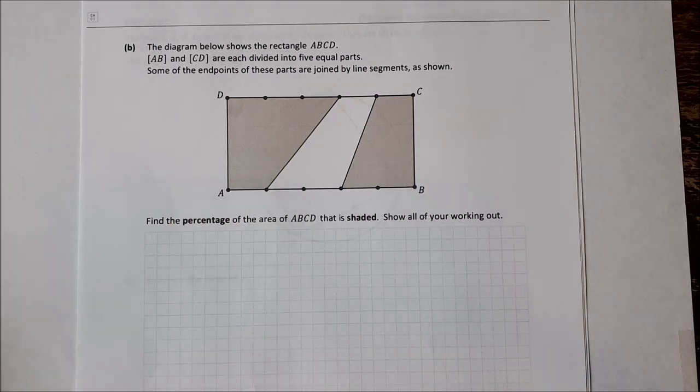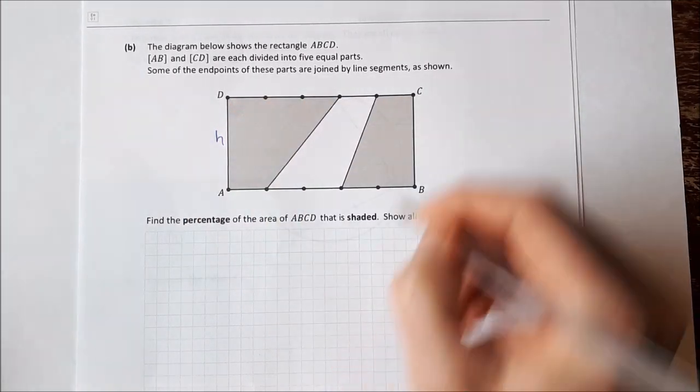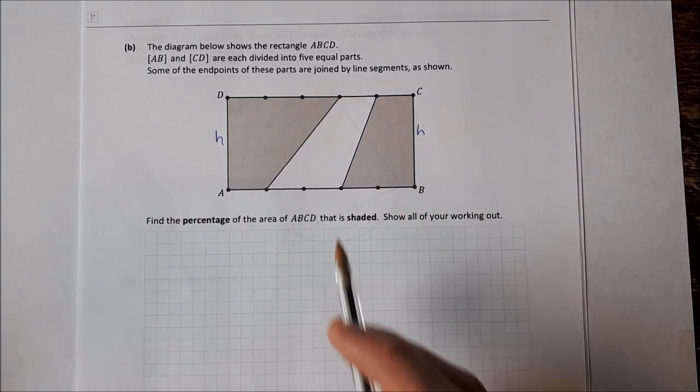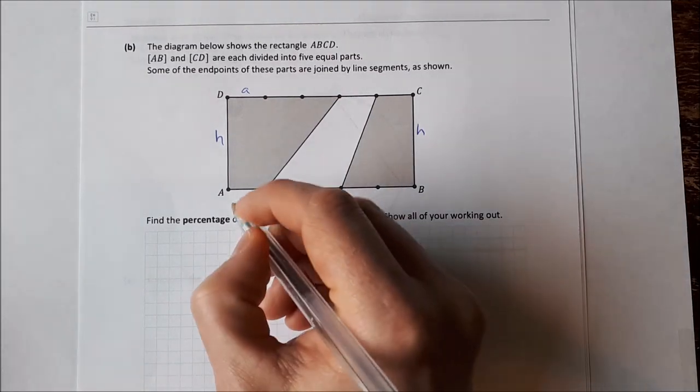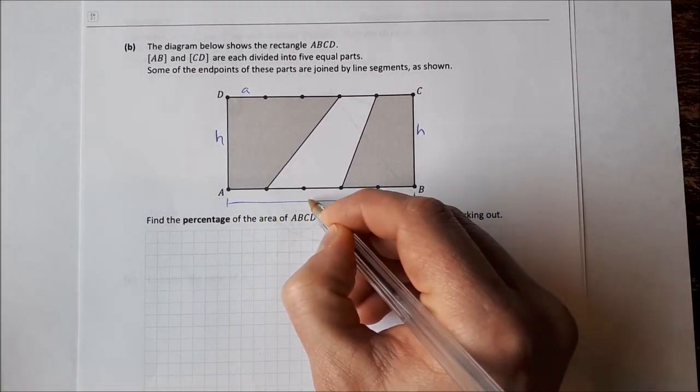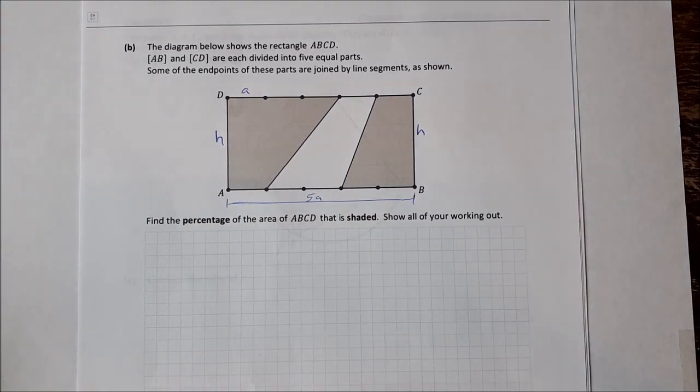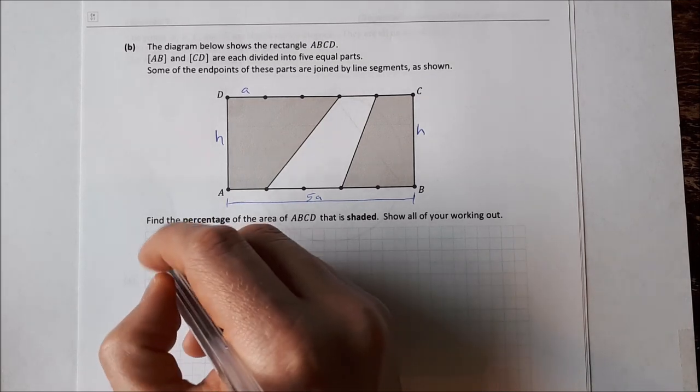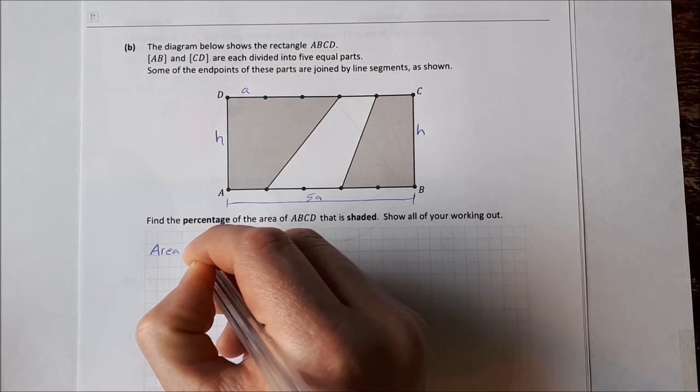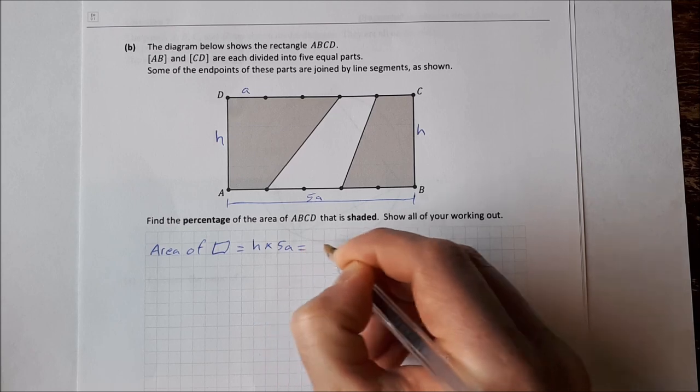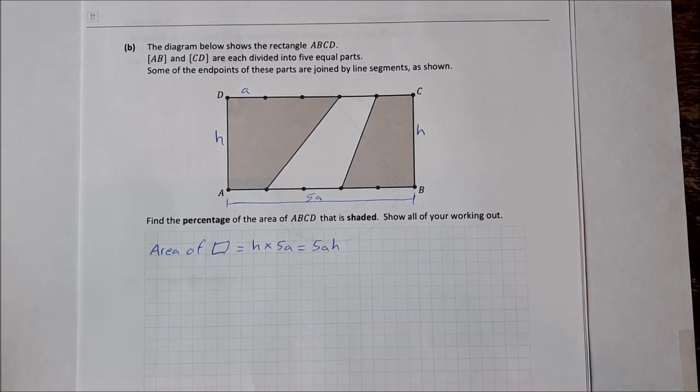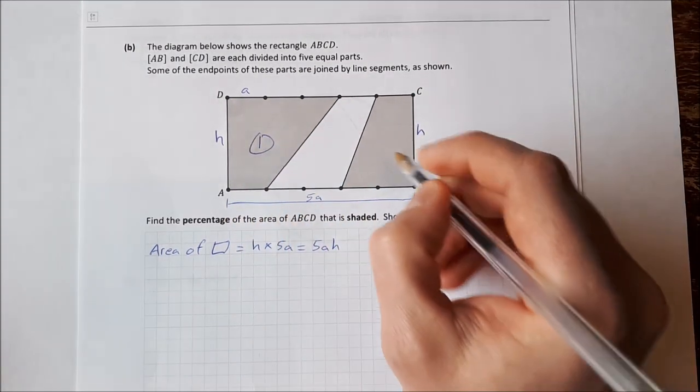So I suppose for this one we need to label some things first. So if we have a rectangle here it has a height H on both ends, and then each section here we can call something. If we called one section A, that would mean the full length here would be 5A. So we can find the area of the rectangle fairly easy. Area of the rectangle is just going to be H multiplied by 5A, so that gives you 5AH. And then to find the shaded area we have two of them, area 1 and area 2.